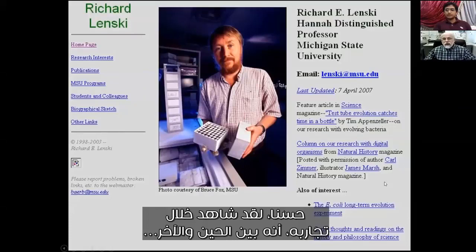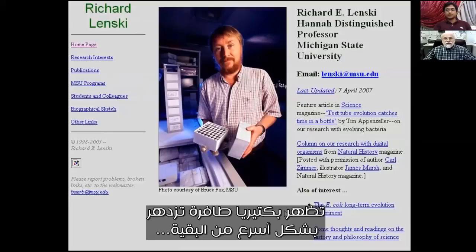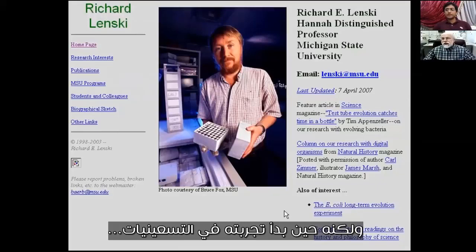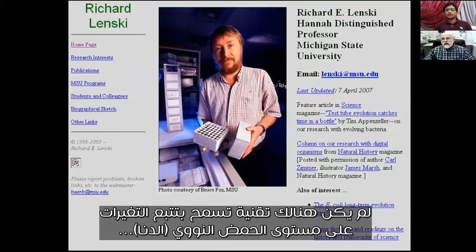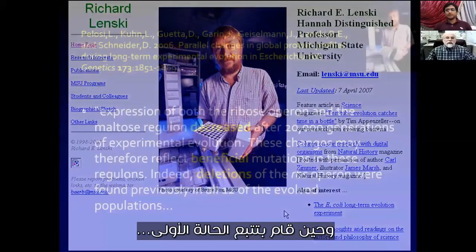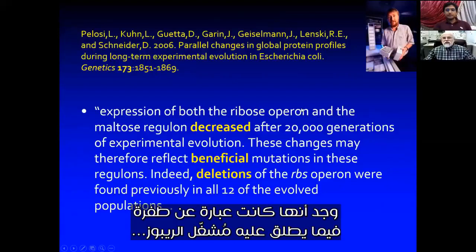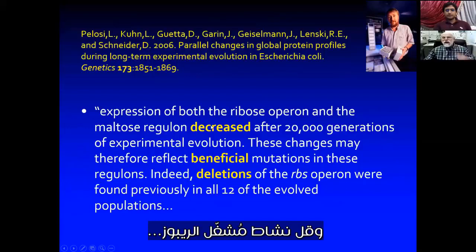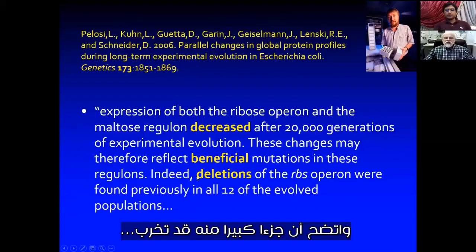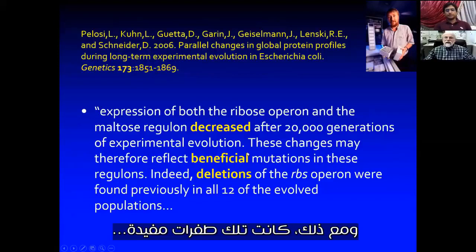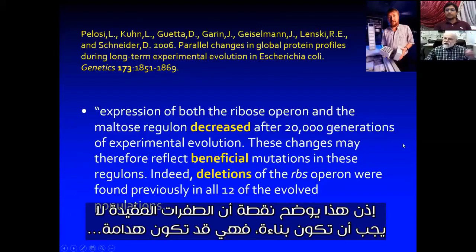Throughout his experiment, every now and again a mutant bacteria would come along that could grow faster than everything else. When he tracked down the first one, he saw that it was a mutation in something called the ribose operon — the activity of it decreased, and much of it was deleted, in other words broken and thrown out. And nonetheless, this was a beneficial mutation. This makes the point that beneficial mutations don't have to be constructive — they can be degradative.